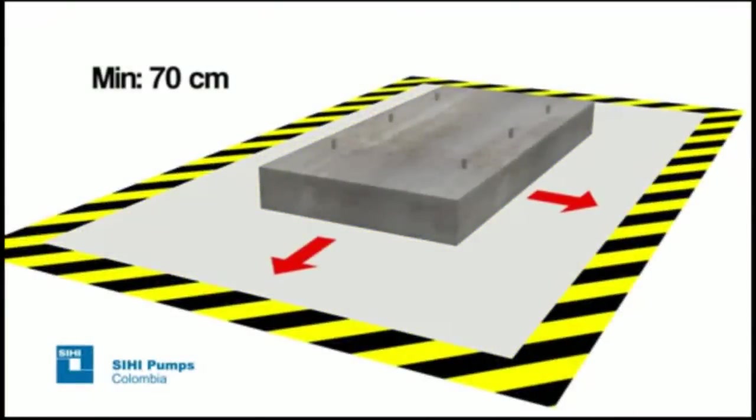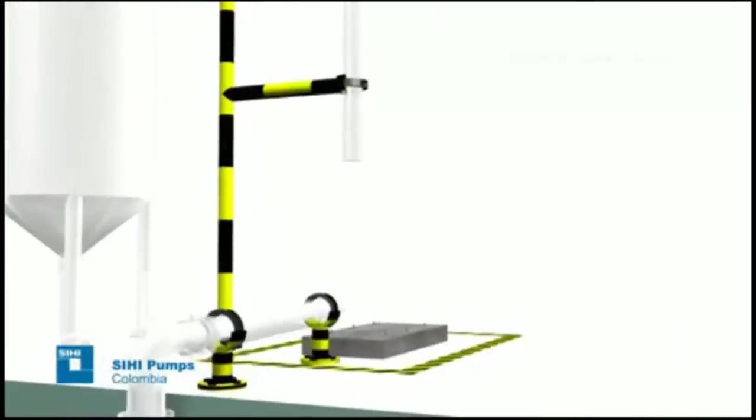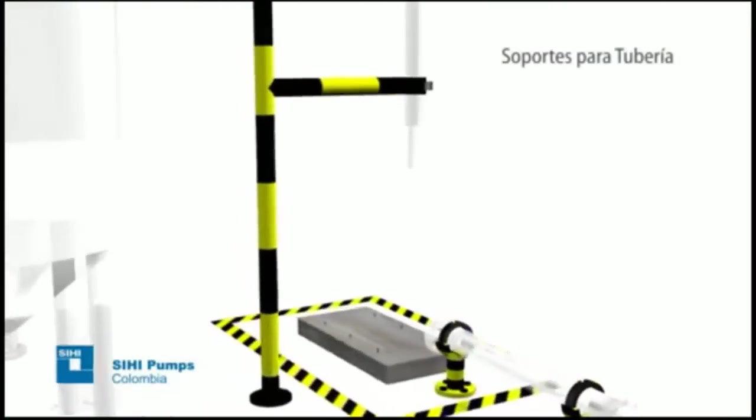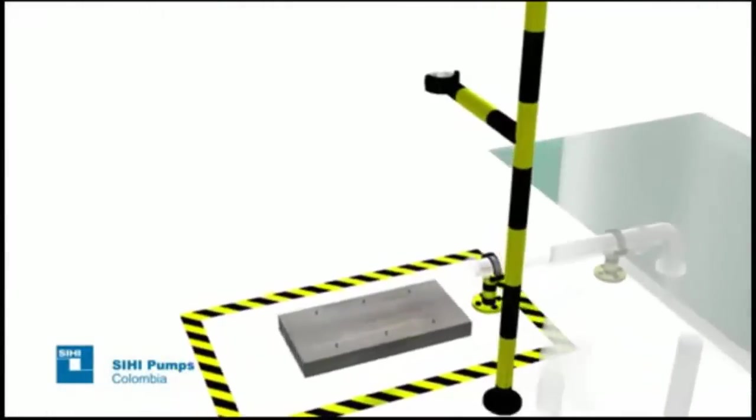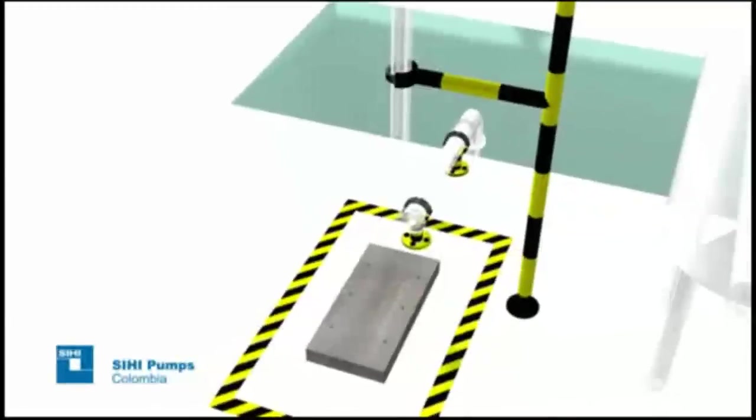As a thumb rule, 70 centimeters of space should be kept from all sides of the foundation for movement, inspection, and maintenance of the pump set. Suction and discharge pipeline with spacer fittings should be installed properly before the pump set is installed on the foundation.